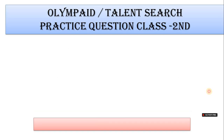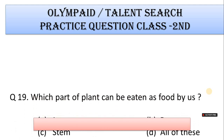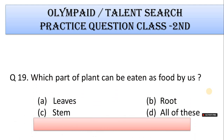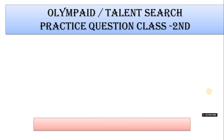Number 19: Which part of a plant can be eaten as food by us? A. Leaves, B. Root, C. Stem, D. All of these. Correct answer is Option D. All of these.